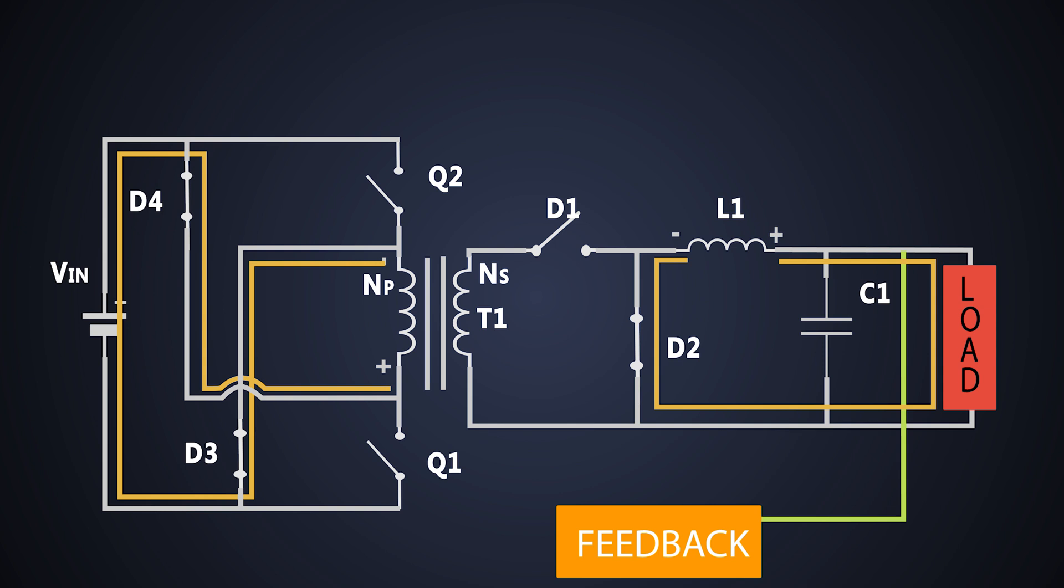In other words, the primary winding itself acts as the reset winding. But putting off time of the MOSFET longer than the ON time will only reset the transformer.